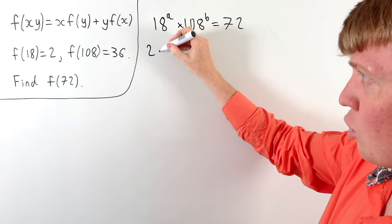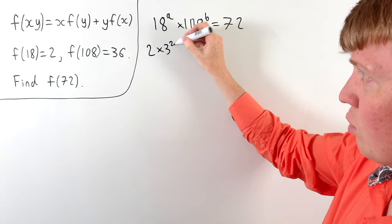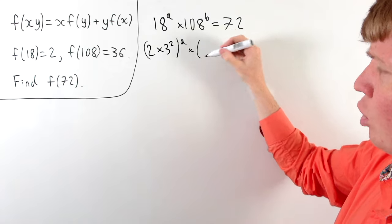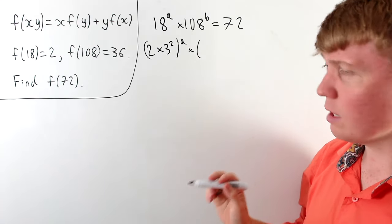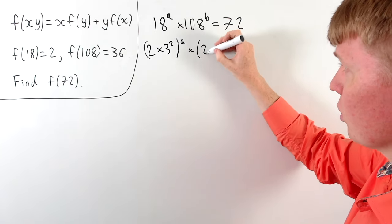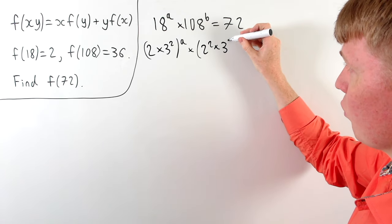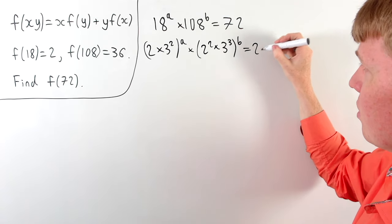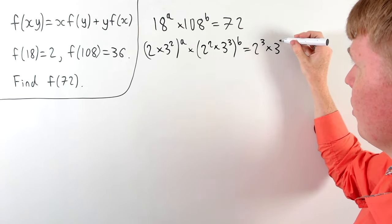So first of all 18 is 2 times 9 or 2 times 3 squared. This all gets raised to the power of a. And 108, this is 27 times 4 so it's 2 squared times 3 cubed. And this is all again being raised to the power of b. And 72 is 8 times 9 so this is 2 cubed times 3 squared.